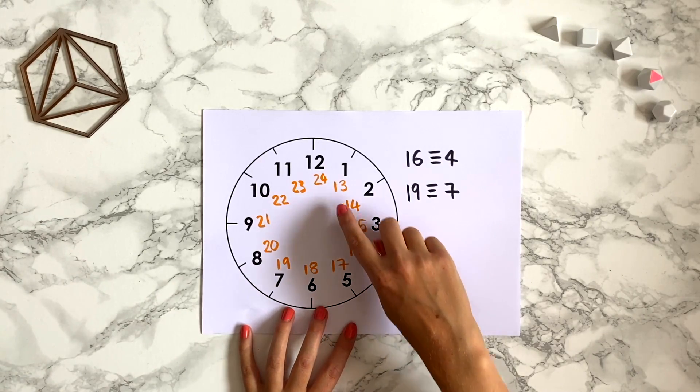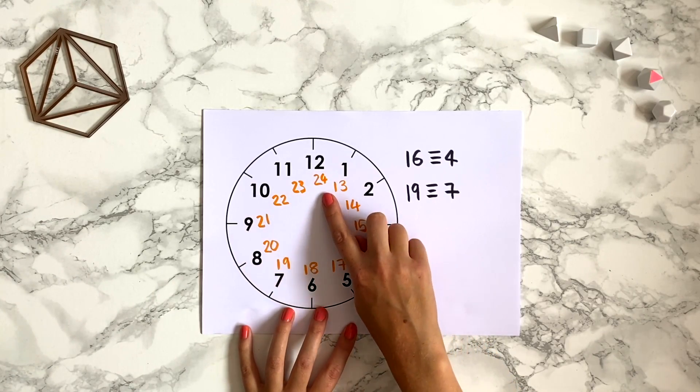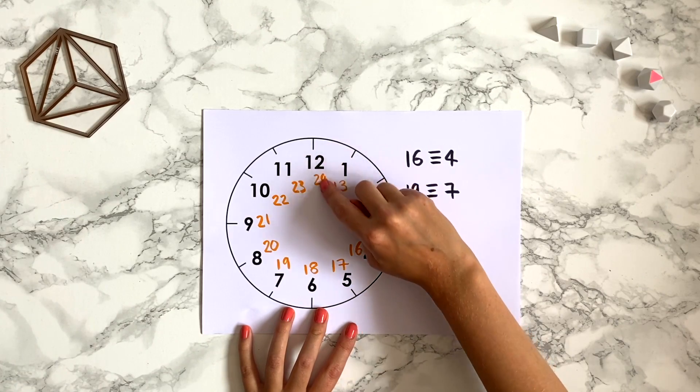In our day-to-day life we of course only need 24 hours, but let's imagine for a moment that we can have more hours in the day. What would 26 o'clock be? Well perhaps you can see that if we continue our clock labeling around, we've got 24 next to the 12,